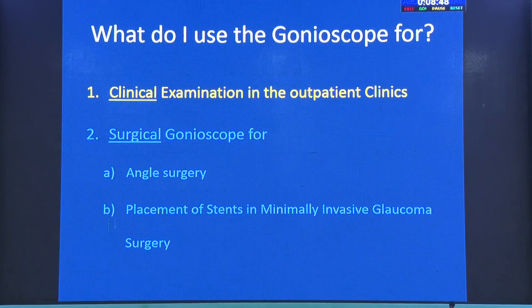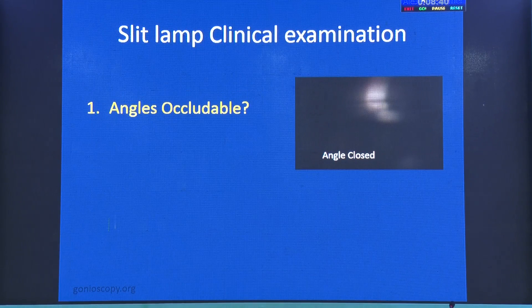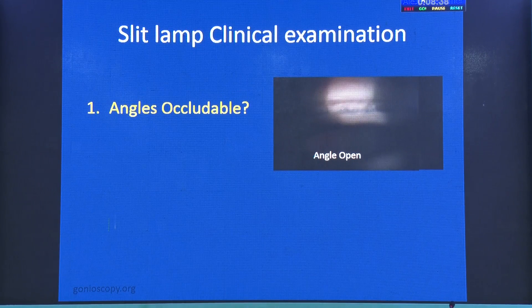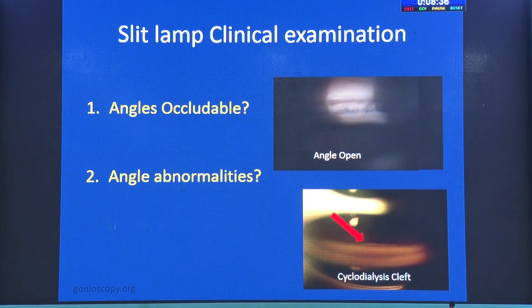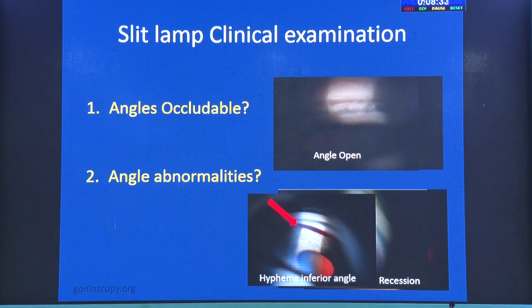We come back to the basic question: what do I use gonioscopy for? I use it for clinical examination in the outpatient clinic to see if the angle is occludable, open, or closed. Are there angle abnormalities like a cyclodialysis cleft, a recession, or a high trabeculum? That's what we are looking at — normal or abnormal.